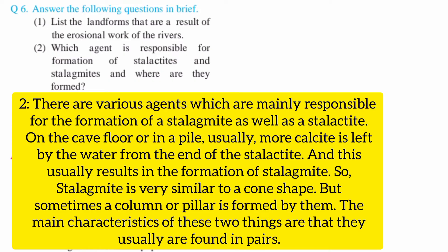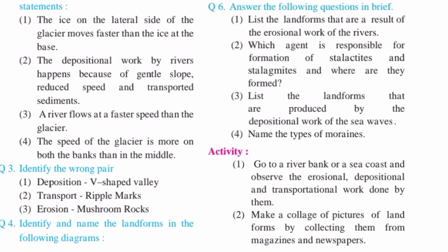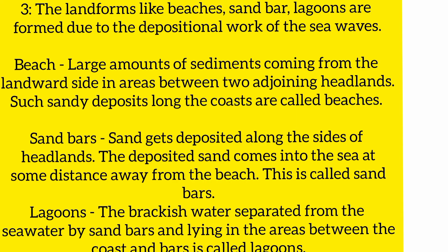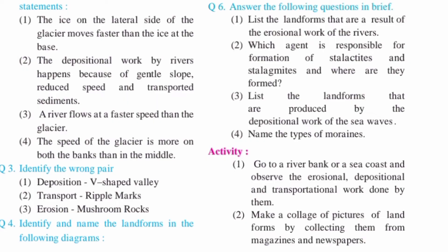Question number 6, second: which agent is responsible for the formation of stalactites and stalagmites, and where are they formed? Question 6, third: list the landforms that are produced by the depositional work of the sea waves. Question 6, fourth: name the types of moraines.